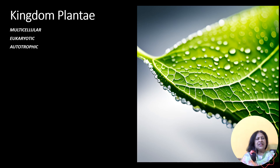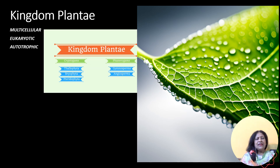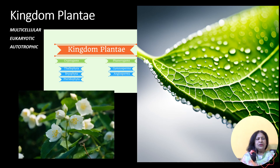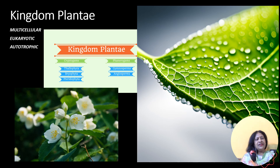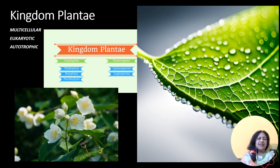Next up is the kingdom of Plantae. Plantae are multicellular with a cellulose cell wall. Their mode of nutrition is generally autotropic with few exceptions who are parasitic like nepanthus.